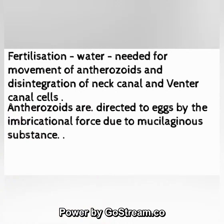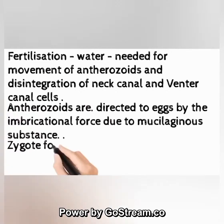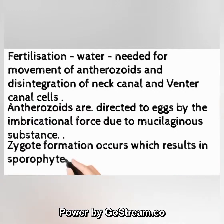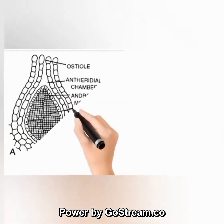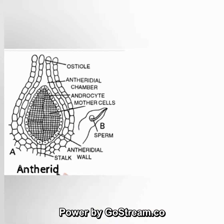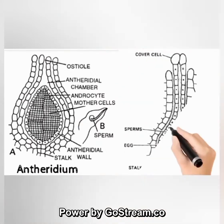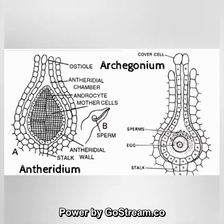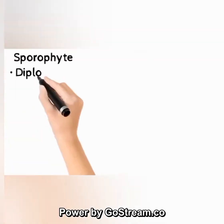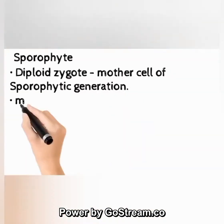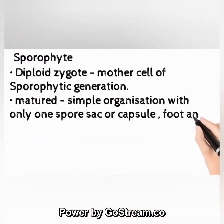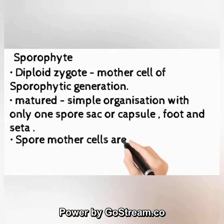Zygote formation occurs, resulting in the sporophyte generation. Diagrams of antheridia and archegonia of Riccia are shown here. Sporophyte (diploid): the zygote is the mother cell of the sporophytic generation. The mature sporophyte has a simple organization with only one spore sac or capsule.